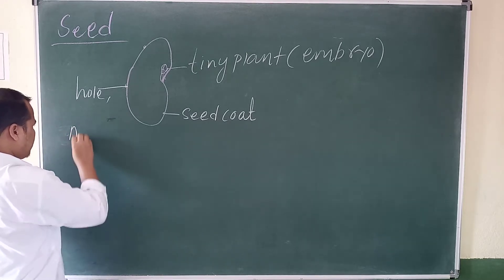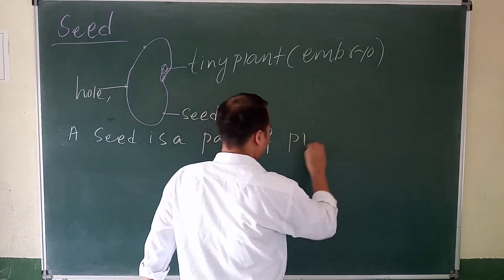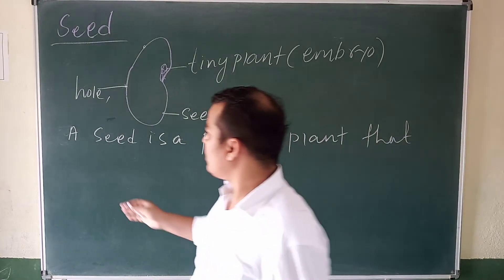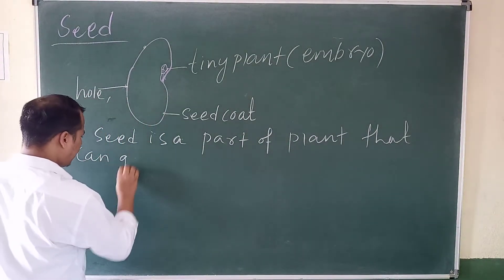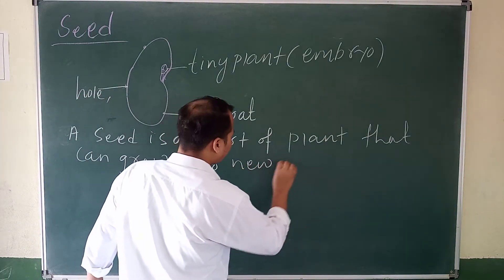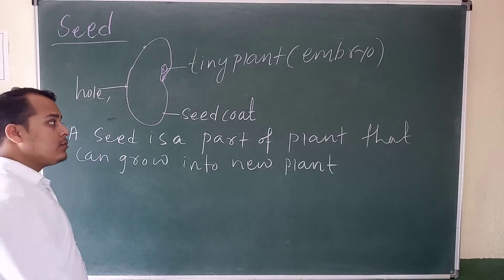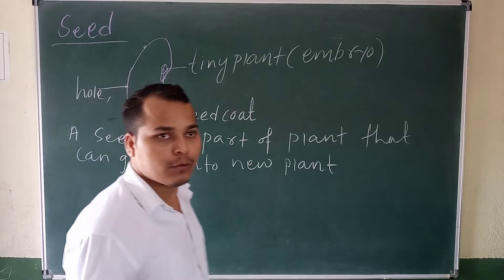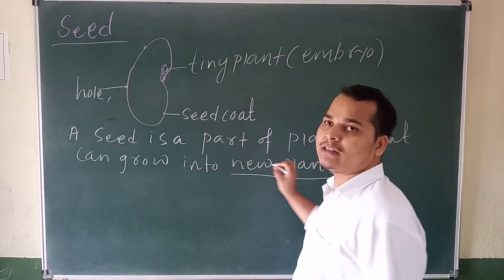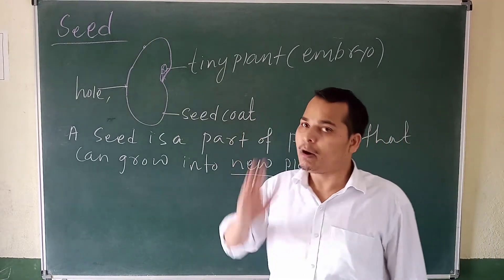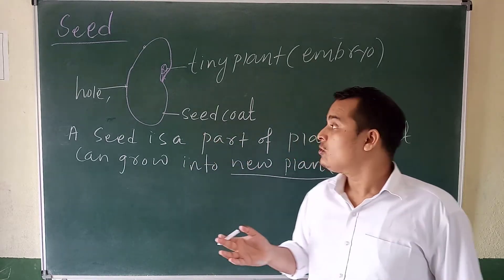A seed is a part of a plant. From the seed, a plant will grow. So a seed is a part of a plant that can grow into a new plant. First, flowers will come on the plant, then flowers will grow into fruits, and from the fruit comes the seed.